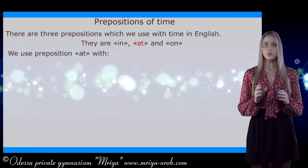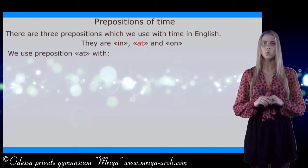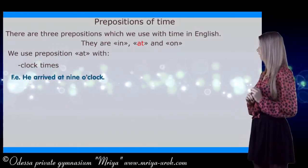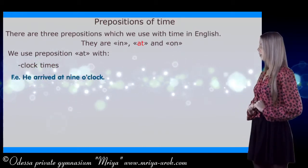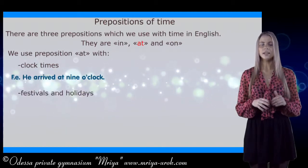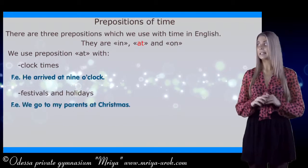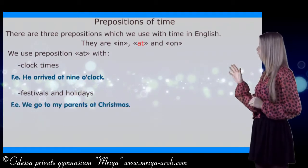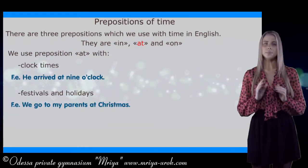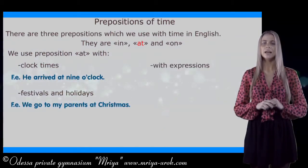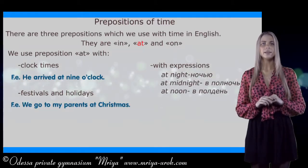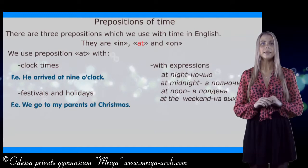We use preposition 'at' with clock times. For example, he arrived at 9 o'clock. We also use it with festivals and holidays. Let's see the example: we go to my parents at Christmas. And we use preposition 'at' with expressions: at night, at midnight, at noon, and at the weekend.